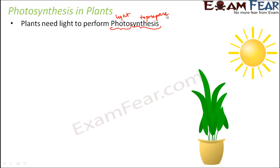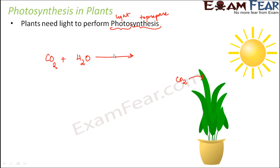During photosynthesis, plants take in carbon dioxide through the stomata — the tiny pores of the leaves — from the atmosphere. This carbon dioxide combines with water, which they receive from the soil, and in presence of sunlight it forms food in the form of glucose.